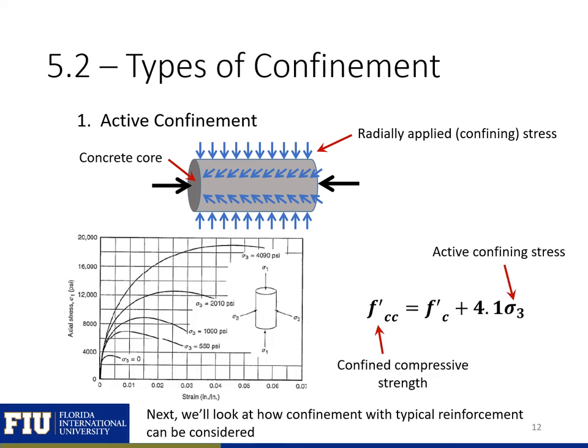For active confinement, our confined compressive strength is equal to our unconfined compressive strength plus 4.1 times our active confining stress. This is based on older testing on cylinders and is an experimentally validated expression for active confinement from Richart et al. Next, we're going to look at how we can take into account the confinement effects with typical reinforcement.